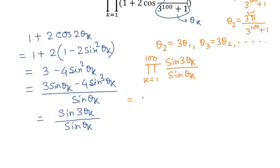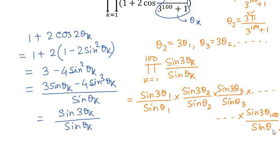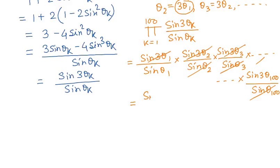We are getting a telescoping product: sin(3θ_1)/sin(θ_1) times sin(3θ_2)/sin(θ_2) times sin(3θ_3)/sin(θ_3), continuing up to sin(3θ_100)/sin(θ_100). Since θ_2 equals 3θ_1, sin(3θ_1) and sin(θ_2) cancel out. Similarly, each successive numerator cancels with the next denominator. Finally, sin(3θ_100) in the last numerator cancels, leaving us with sin(3θ_100) / sin(θ_1).